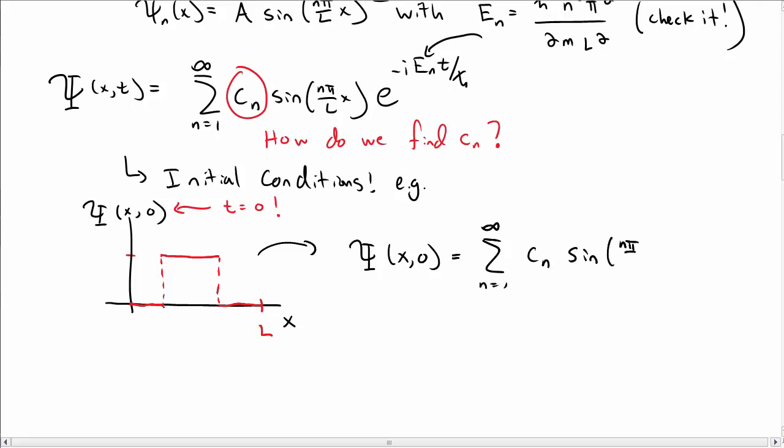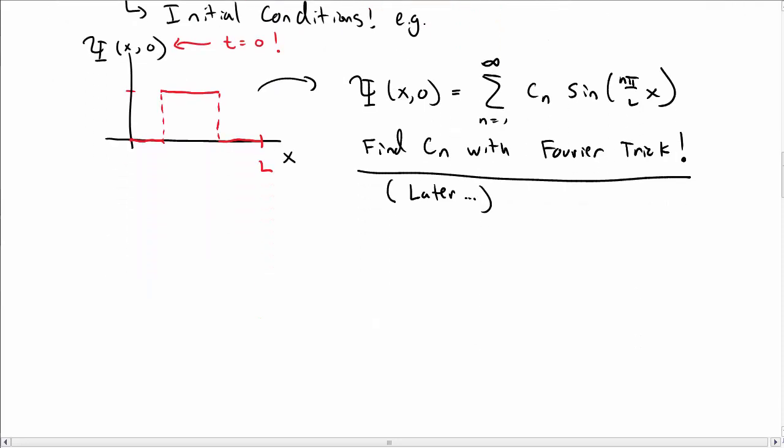then we would set t equal to zero in our expression for capital Ψ, so it becomes a sum c_n sine of nπx over L, and we would then use the Fourier trick to find the c_n's for the ψ of x comma zero that we were given. Again, we're going to talk about this a bit later.